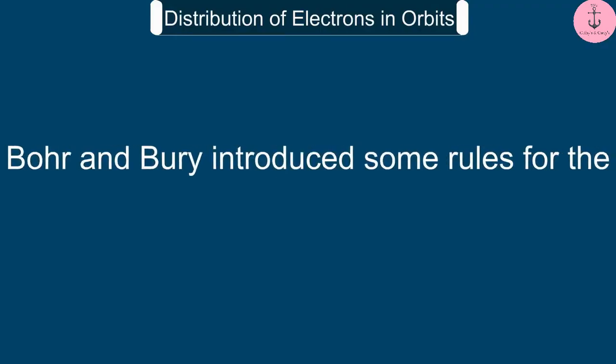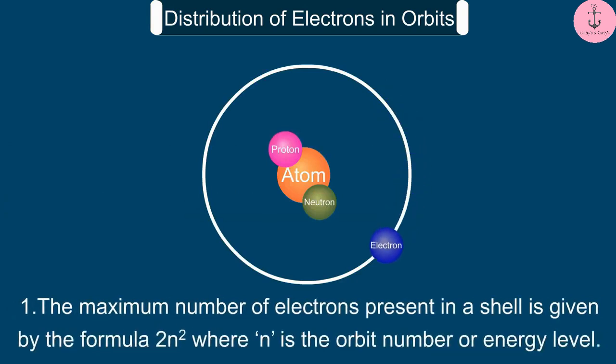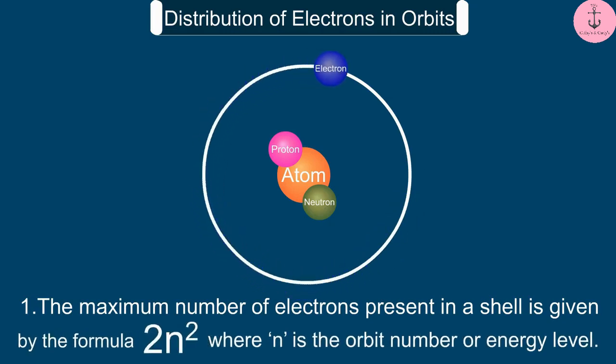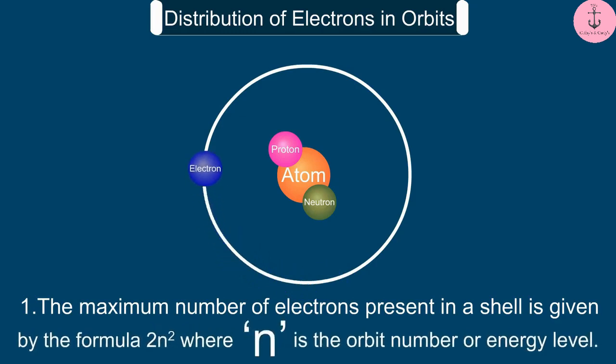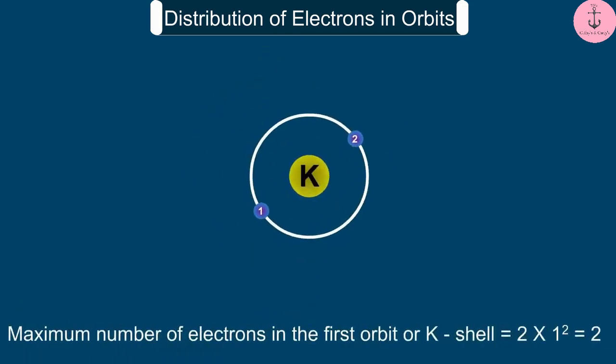Bohr and Bury introduced some rules for the distribution of electrons in different orbits. The maximum number of electrons present in a shell is given by the formula 2n², where n is the orbit number or energy level. Therefore, the maximum number of electrons in the first orbit, or K shell, is equal to 2 into 1 square, that is 2.